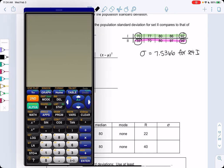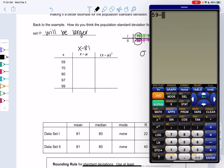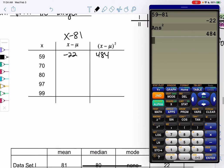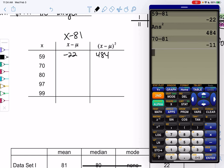So we will do 59 minus 81, and we get negative 22. And then rather than working my way down, I'm going to work my way over. So if you just hit squared, it'll know that we're squaring the negative, and we get 484. So I find it a little bit more efficient to go this way. 70 minus 81, negative 11, and square it, we get 121.